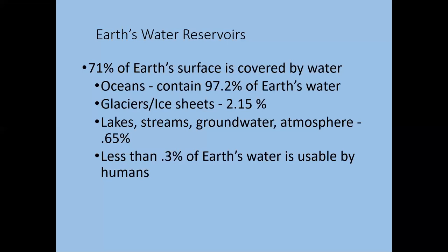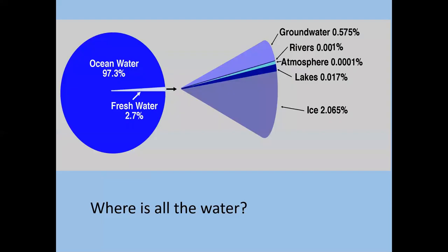There are some places that do desalinate water, so there are exceptions. Glaciers and ice sheets are in areas where not a lot of people live and it's very hard to harvest water from them. So we're mostly talking about streams, lakes, and groundwater as where most of our usable water comes from.